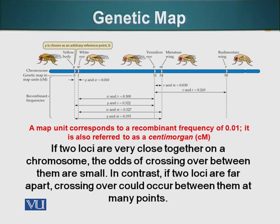So using this information, scientists were able to make genetic maps, which were basically relative positions of genes on a chromosome.